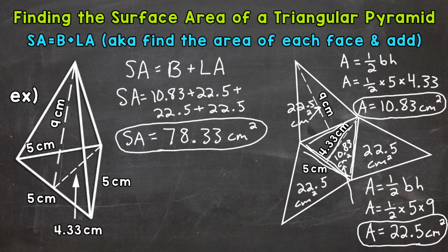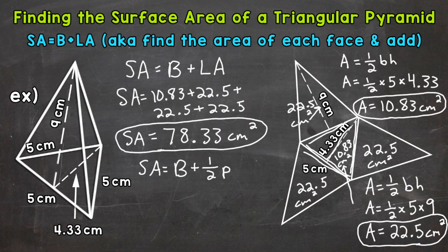To recap: we found the area of the base, plus the area of the lateral faces, added everything together, and that gave us our total surface area. Now I'm going to show you one more way to find the surface area of a triangular pyramid, specifically for regular triangular pyramids — where the sides of the base all have to be the same in order to use this next formula. The formula is: surface area equals the area of the base plus one-half times the perimeter of the base times the slant height.